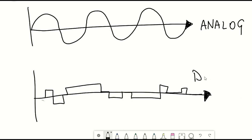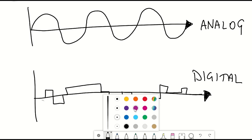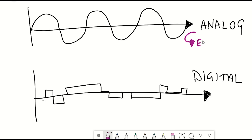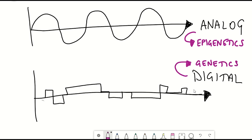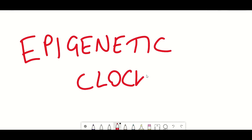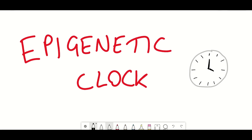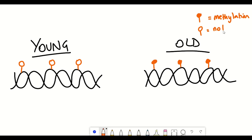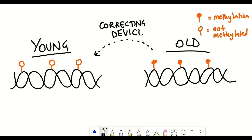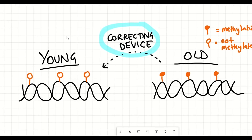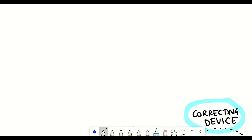Going back to epigenetics, more evidence supporting the role of epigenetic changes during ageing comes from many studies that have calibrated so-called molecular clocks that can actually measure biological age. What we want to be able to do is actually alter these marks and restore them to a more youthful state — finding the biological correcting device. As stated in Lifespan, David says: 'I believe we may have finally found the biological correcting device.'